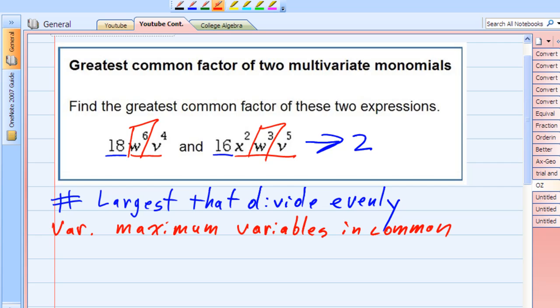Because even though the first one has six, the second one only has three. So they both have at least three W's. So that gives me W3.